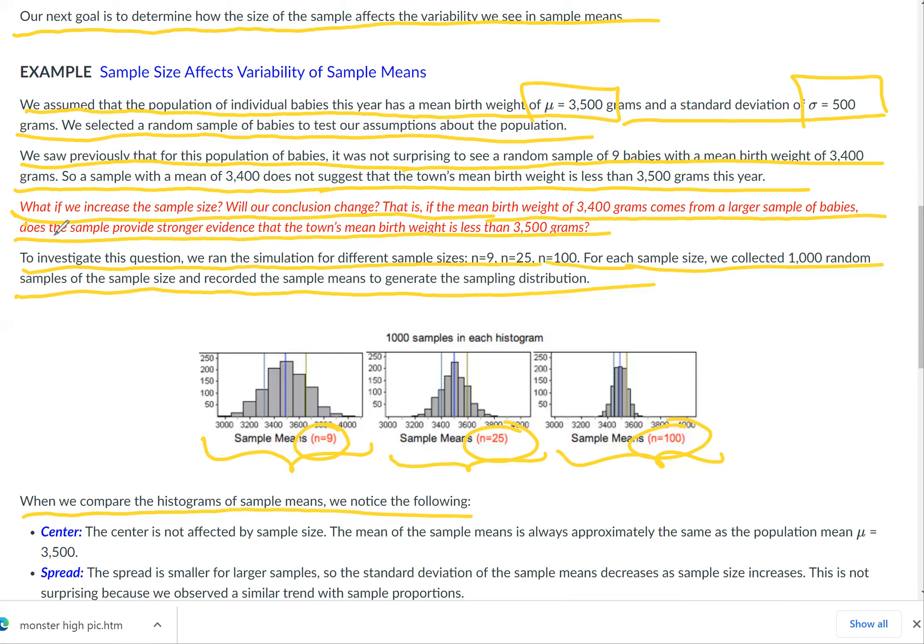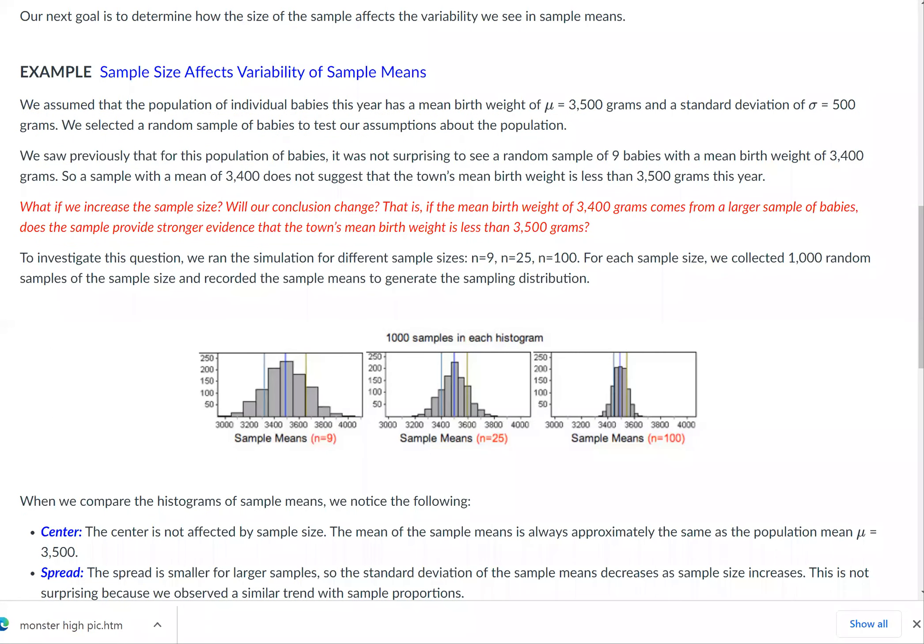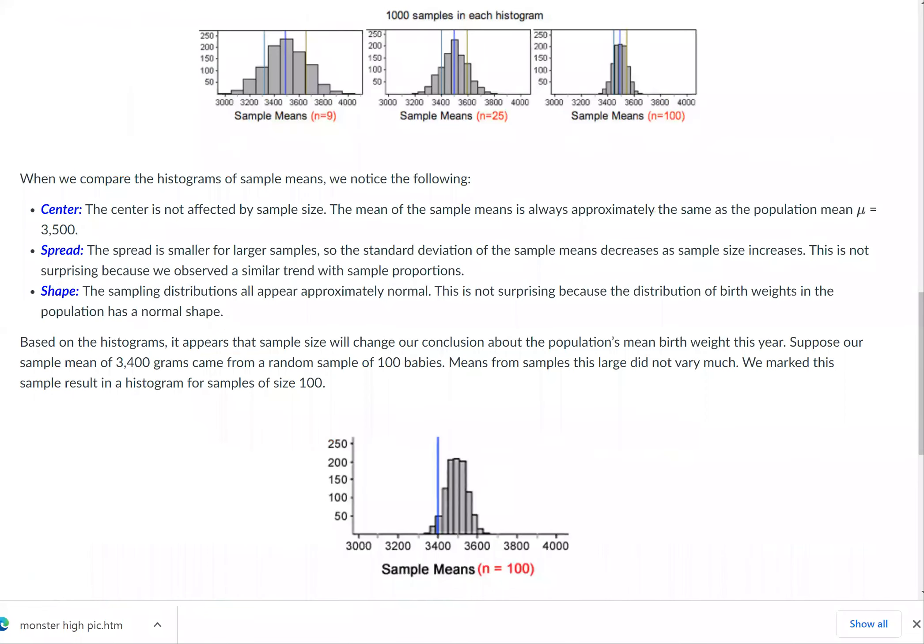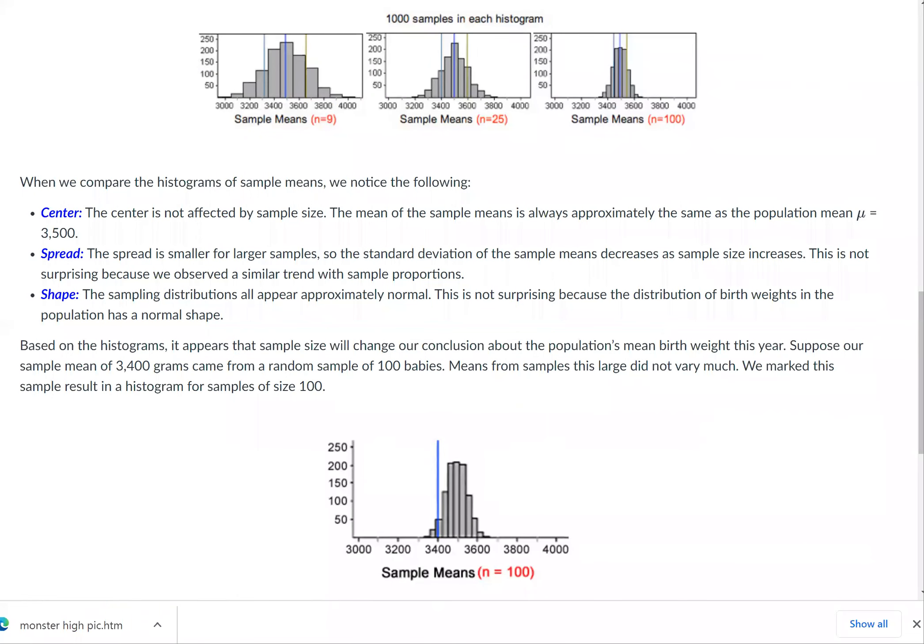When we compare the histograms of sample means, we notice the following. The center is not affected by the sample size. The mean of the sample means is always approximately the same as the population mean, 3,500. So no matter how many babies you select in each sample, 9, 25, or 100...